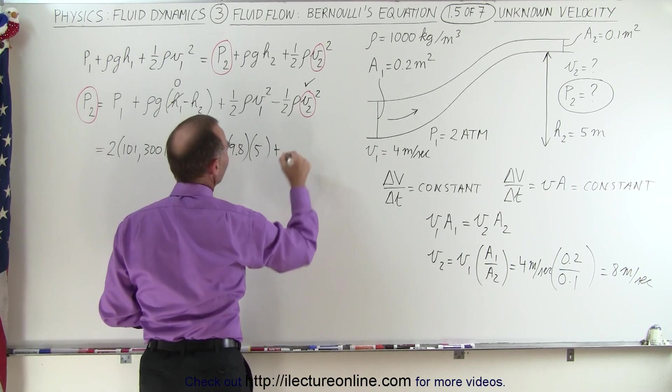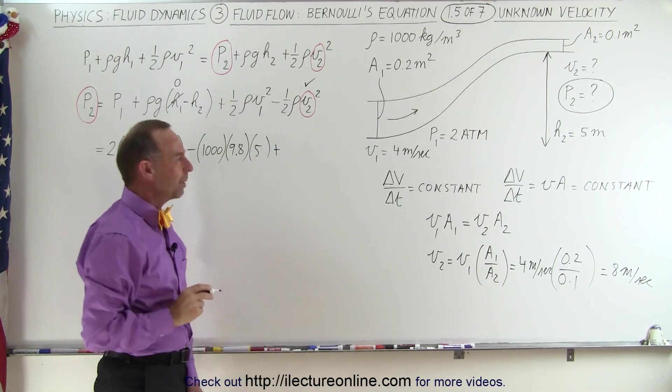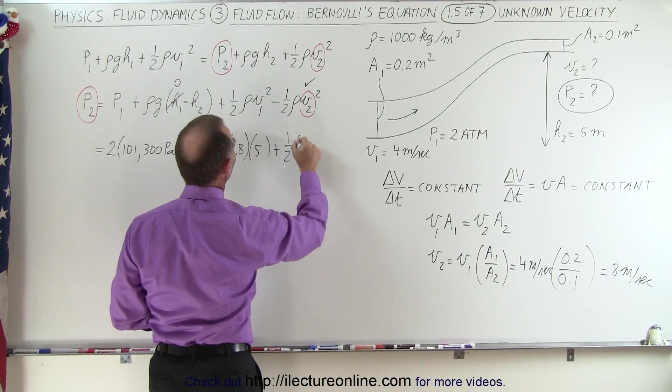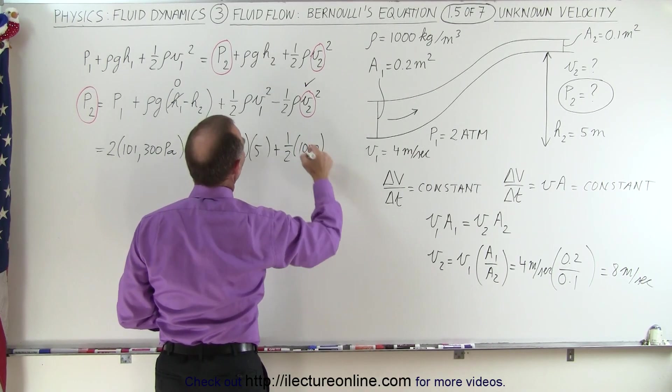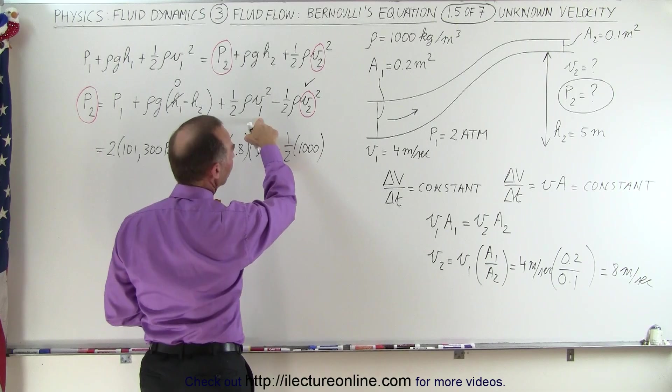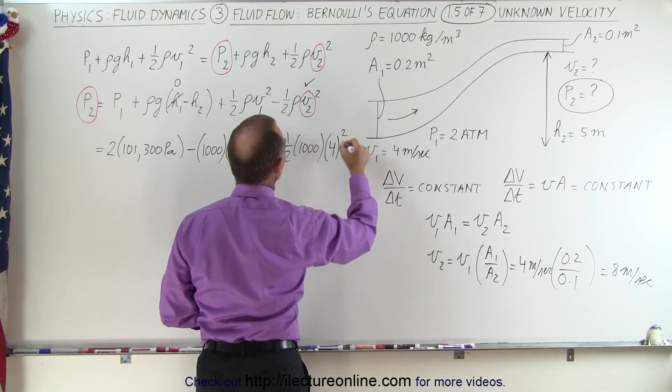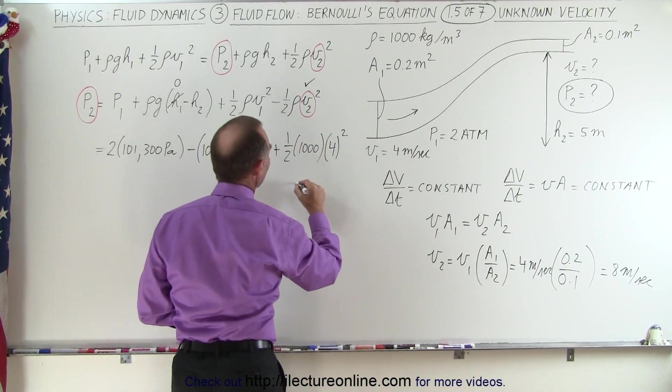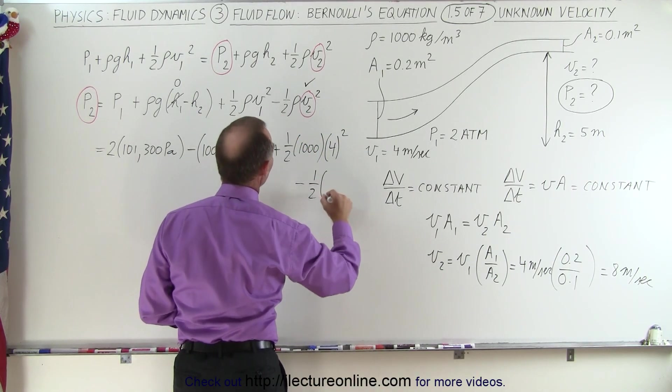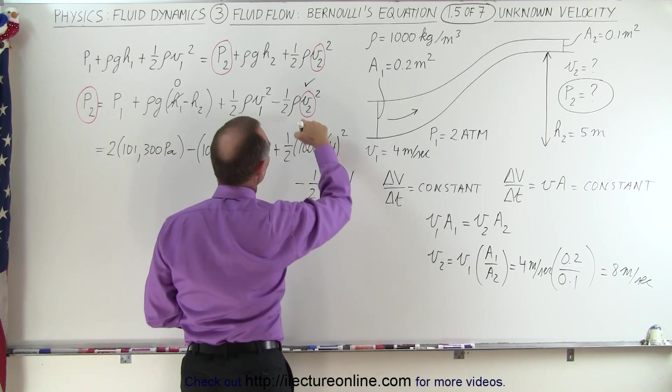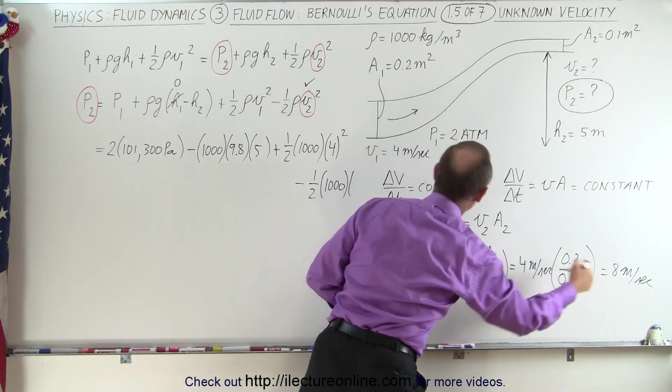Here we get plus, I'm actually running out of room, we'll figure that out here. So plus one half times the density times the velocity 1 squared, so V1 is 4, we square that, we get 4 squared, and I'm subtracting from that minus one half times the density times V2 squared, that would be 8 squared.